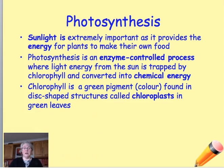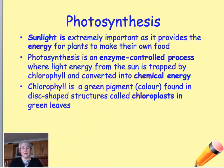The light energy is trapped by chlorophyll, and chlorophyll is a green pigment — it's the green colour in your plant, and it's found in structures called chloroplasts in the green leaves. The light energy provided by the sun is converted into chemical energy. If you see a question asking what light energy is converted into, the answer is chemical energy — in other words, it's converted into glucose.